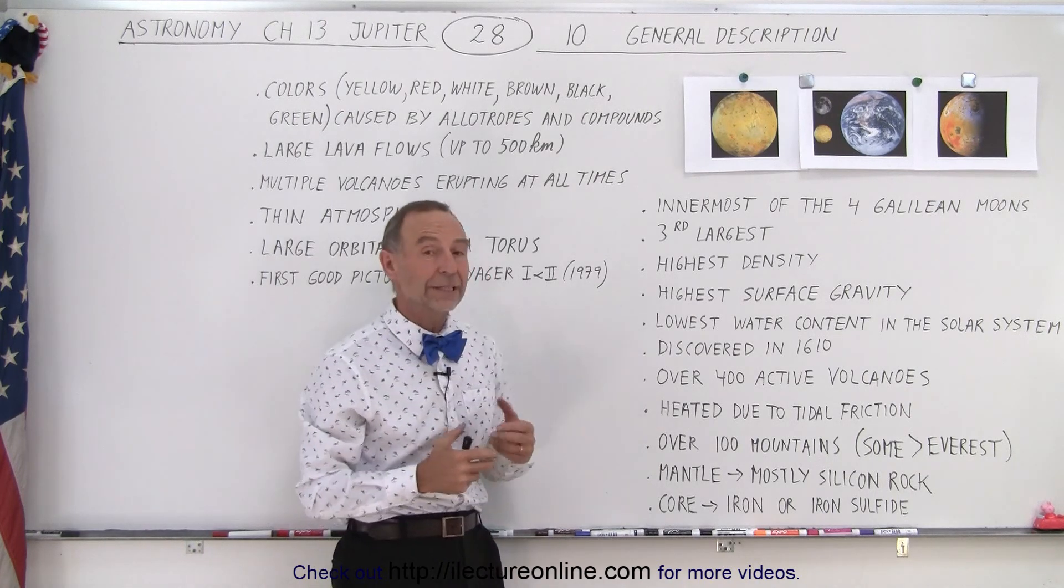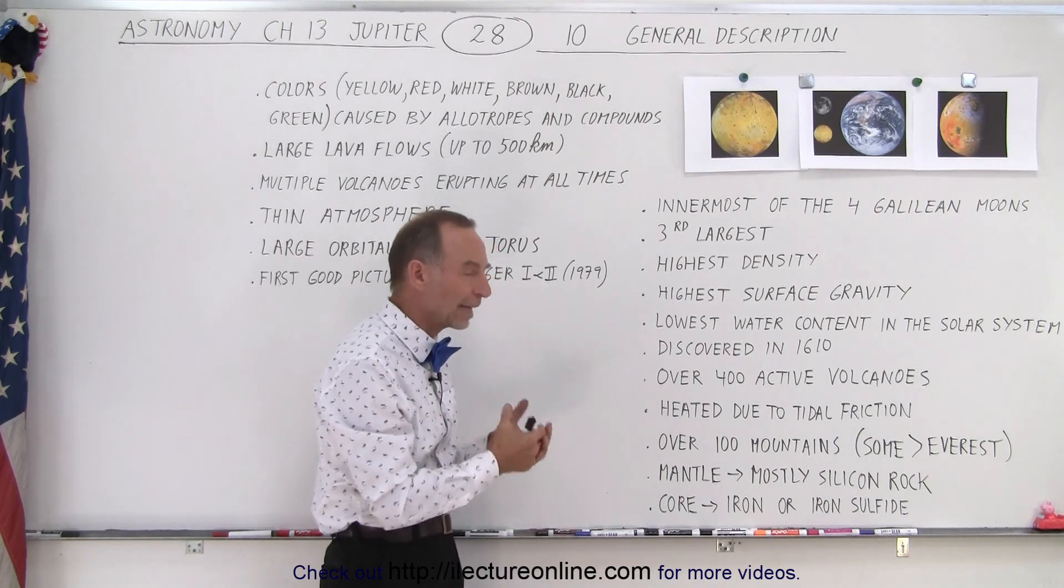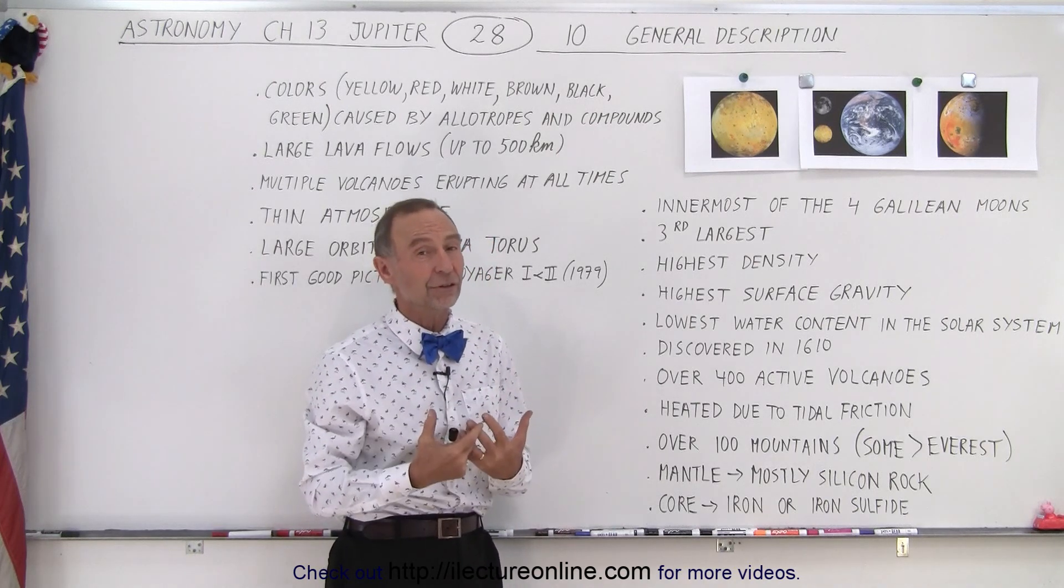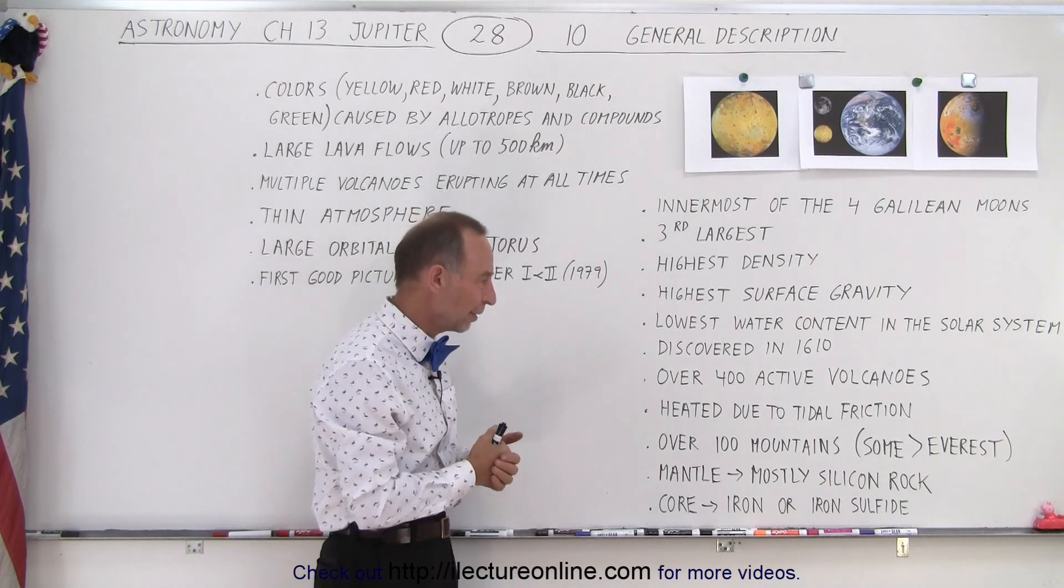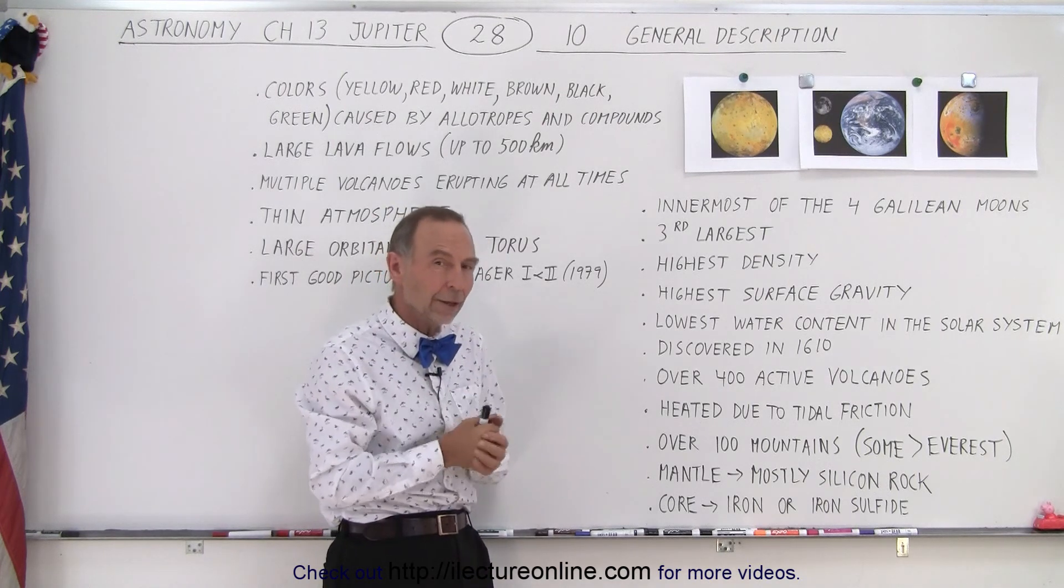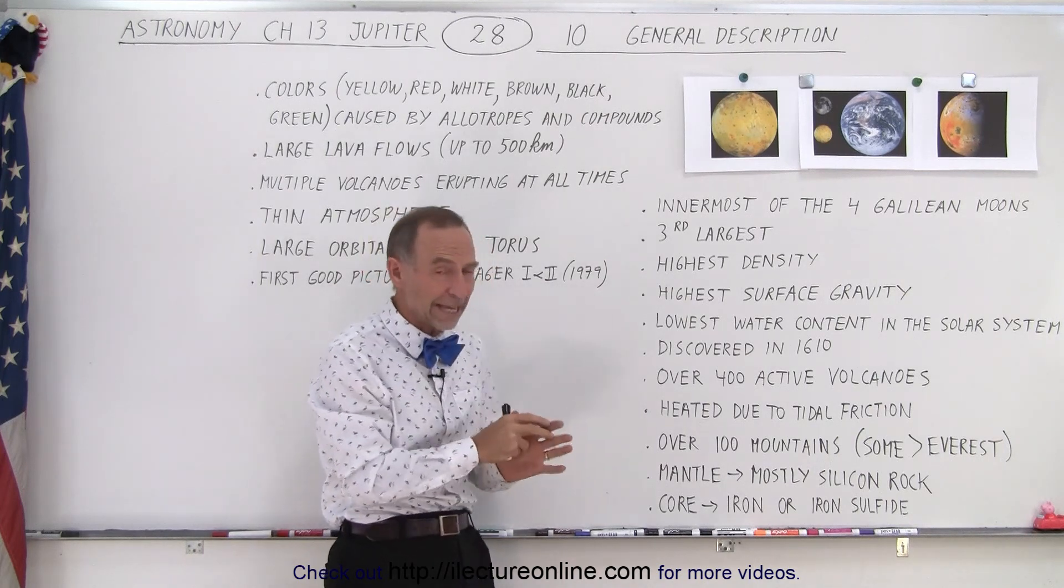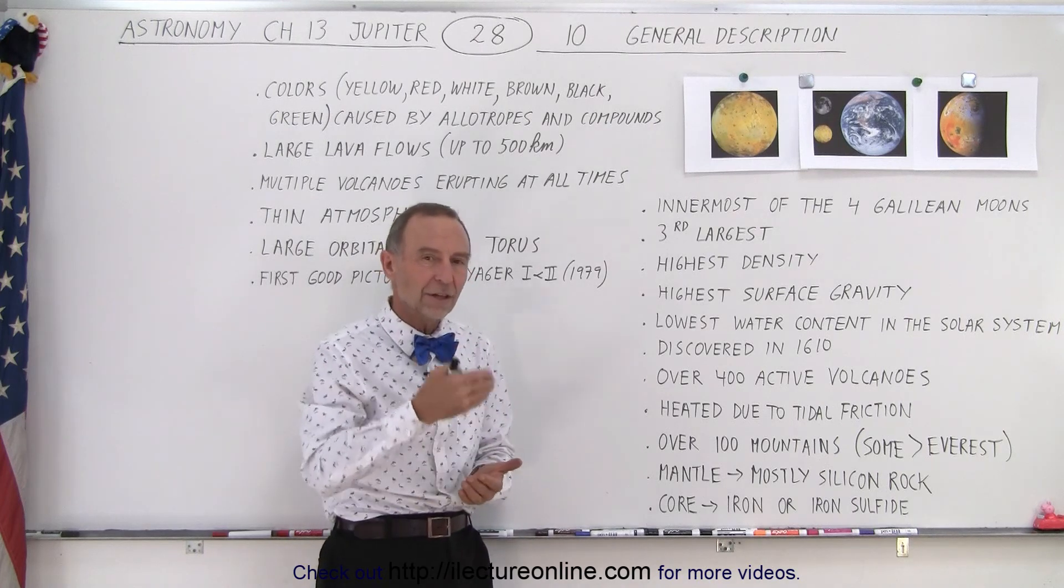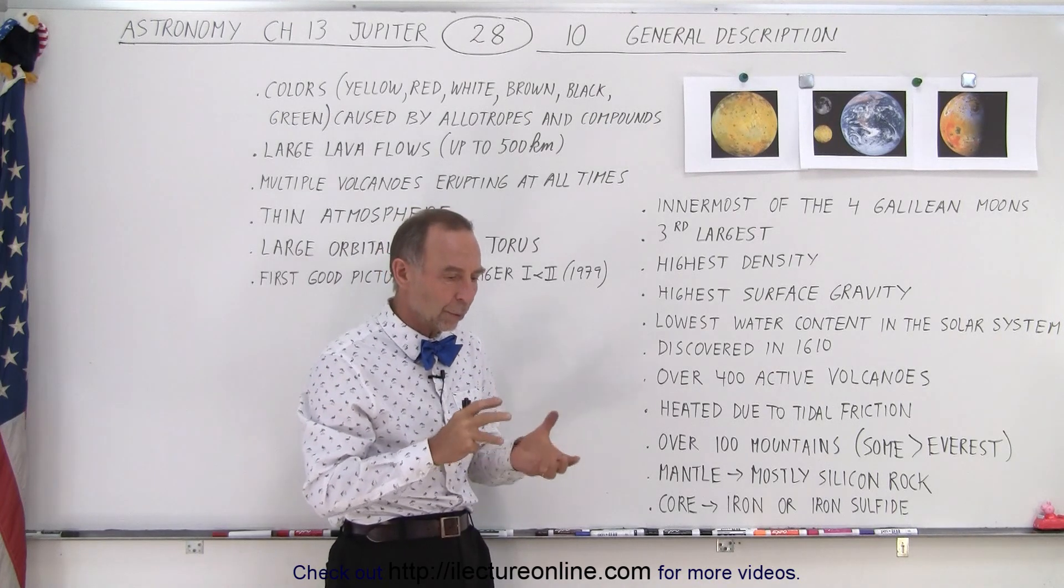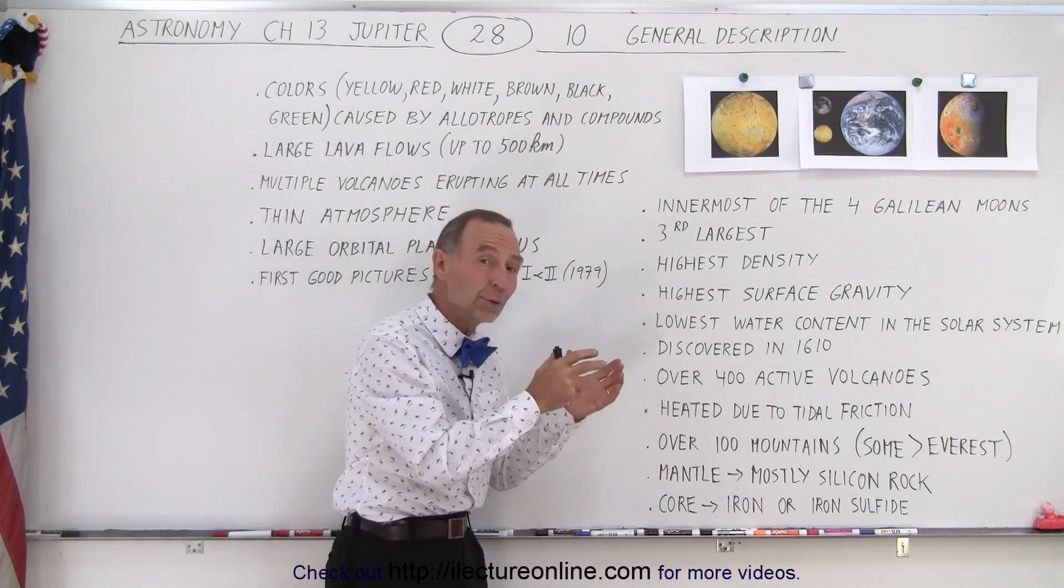The reason why there's so many active volcanoes is because the interior of Io is heated due to tidal friction, primarily tidal friction, not so much the decay, the nuclear decay of radioactive elements within the moon itself. There's some of that, but the vast majority of the heat comes from the tidal friction. And it's because of this orbital synchronization between it and the other moons.